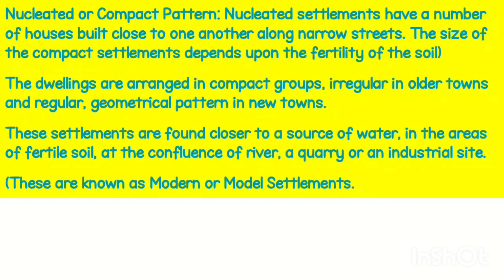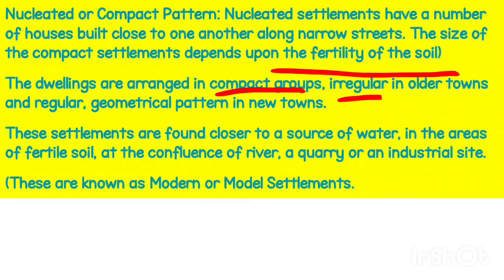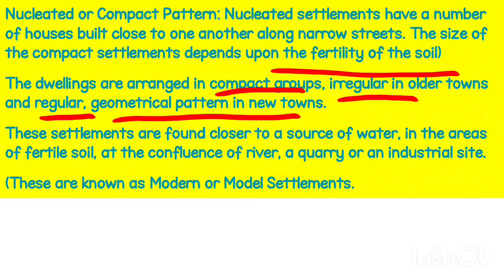The nucleated or compact settlement has a large number of houses built close to each other along narrow streets and roads. Dwellers depend upon the fertility of soil and are arranged in compact groups — irregular in older towns and a regular geometrical pattern in new towns. These settlements are commonly found close to a source of water, in areas of fertile soil, and at the confluence of rivers.